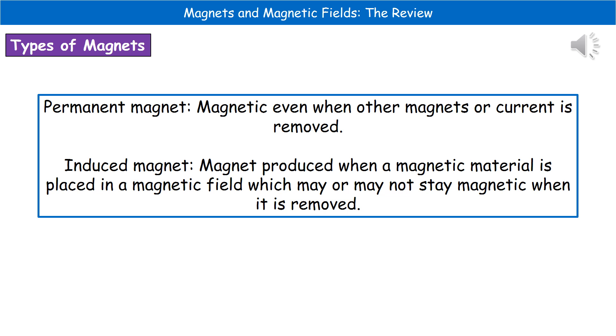So what we actually find is that when we're talking about magnets, there are two different types that we need to be aware of. The first one, the permanent magnets. So these are ones that are magnetic even when other magnets or currents are being removed. So literally the permanent magnet is one that's just sitting on its own that will still be magnetic. Whereas an induced magnet, this is one that's only produced when we've got a magnetic material placed in a magnetic field. And when we remove that magnetic field, it may or may not stay magnetic afterwards. So just make sure you remember the difference between the permanent magnet and the induced magnet.